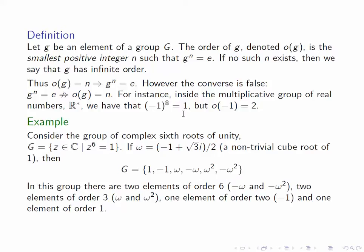For a more complicated example, let's look at the group of complex sixth roots of unity inside the complex numbers, all the numbers such that z to the 6 equals 1. If we take a nontrivial cube root of unity and call it omega, minus 1 plus root 3i over 2, then G consists of the elements 1, minus 1, omega, minus omega, omega squared, and minus omega squared.